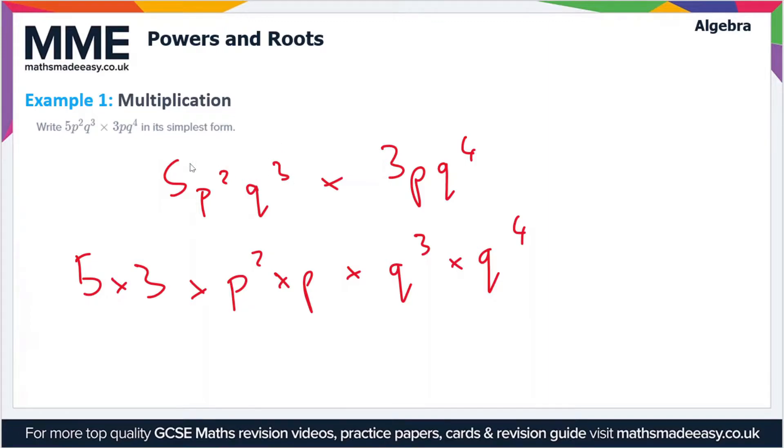We can just reorder the expression because everything is multiplied together here. Let's put some brackets around each part just so it makes it more clear. So we've got 5 times 3 first of all, which is 15. Then we're multiplying this by p² times p.